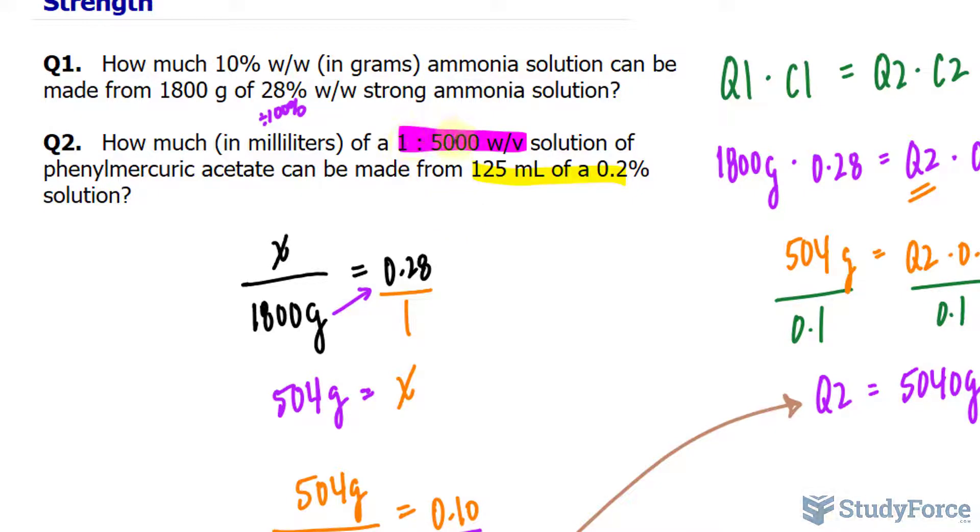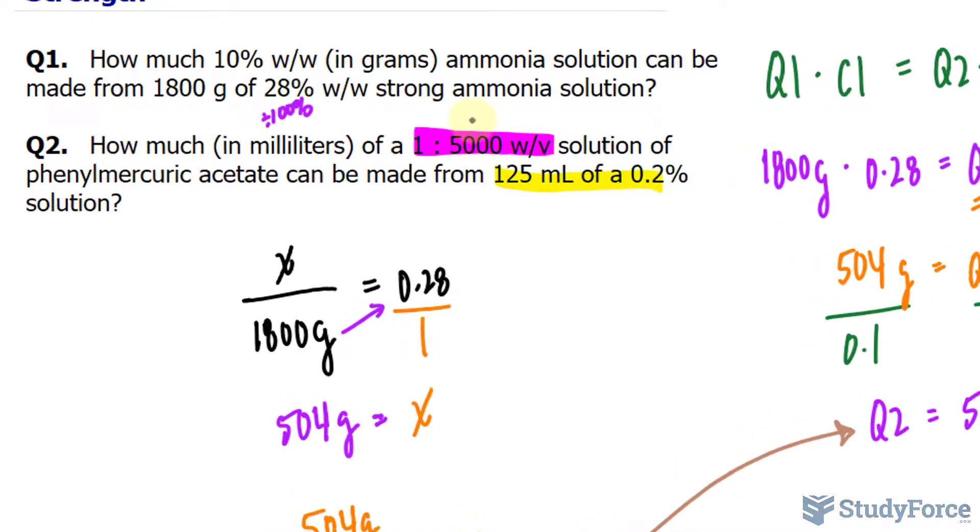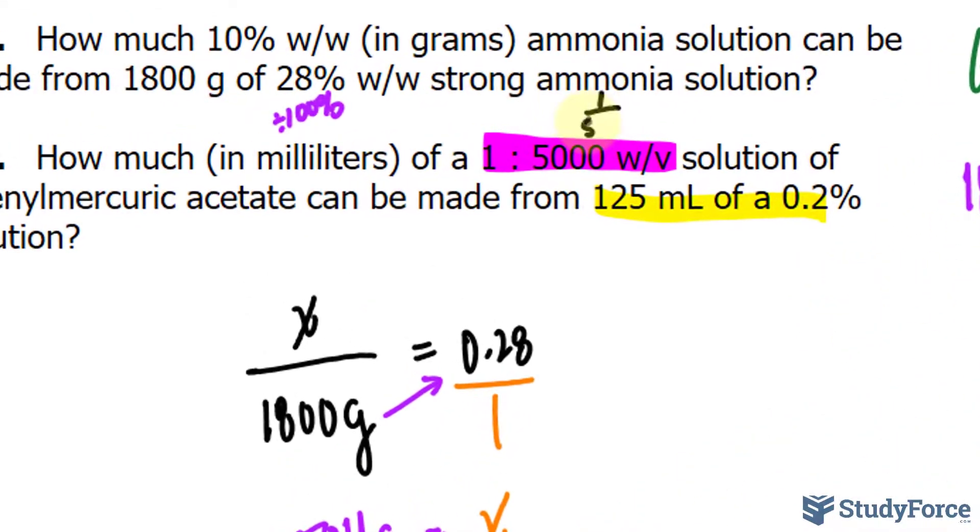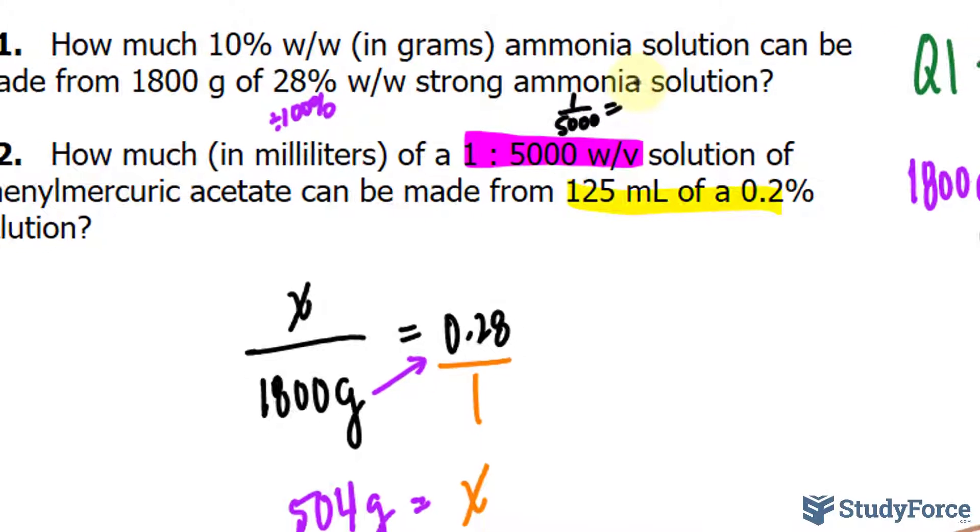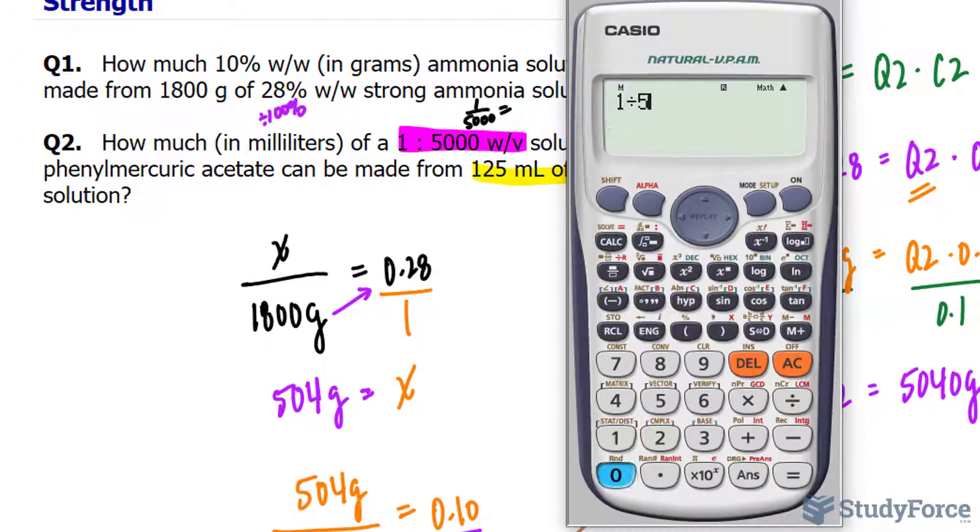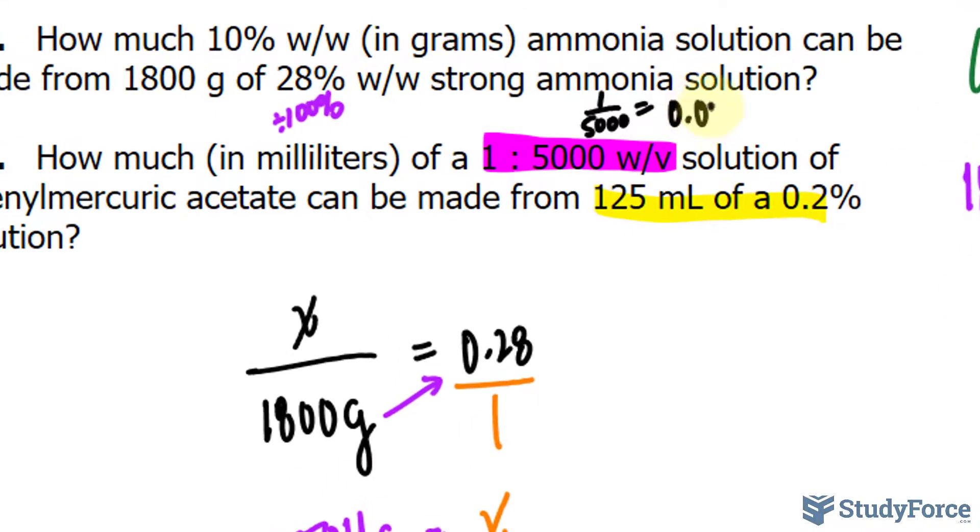But 1 in 5,000 is the same thing as 1 over 5,000. And every fraction can be written as a decimal, and decimals can be made into percentages. So if I wanted to know what this was as a decimal, I would simply take 1 divided by 5,000, and my calculator should give me something like this, which means 0.0002.